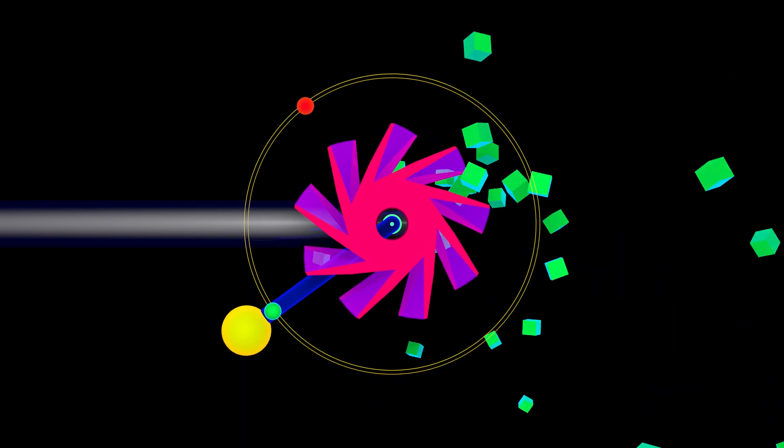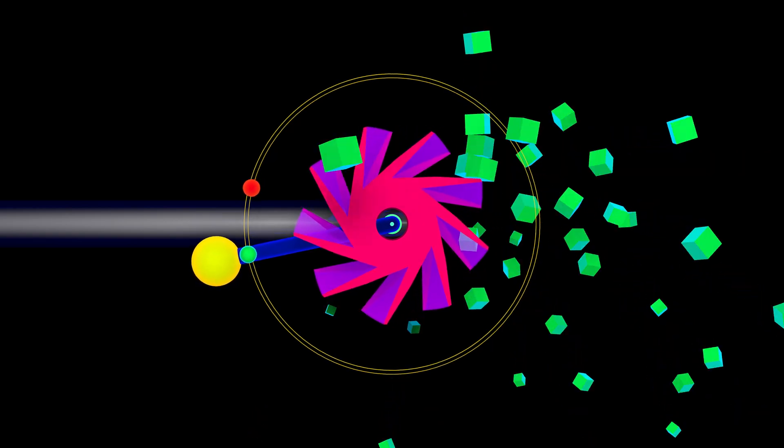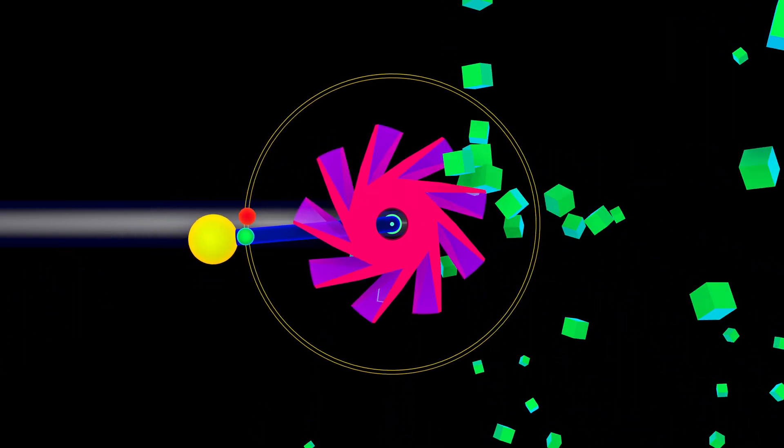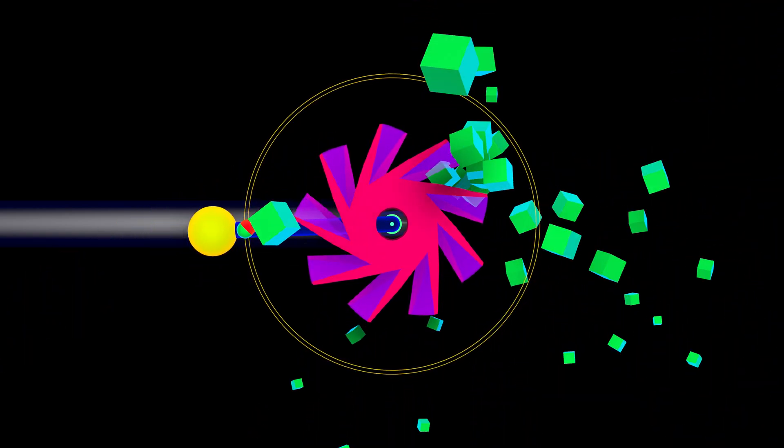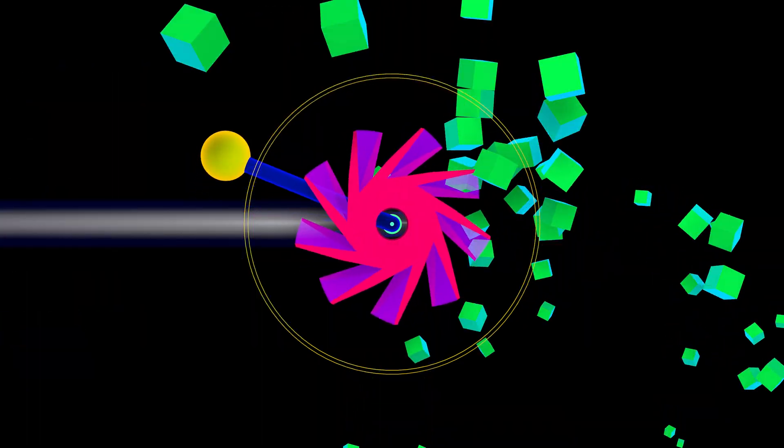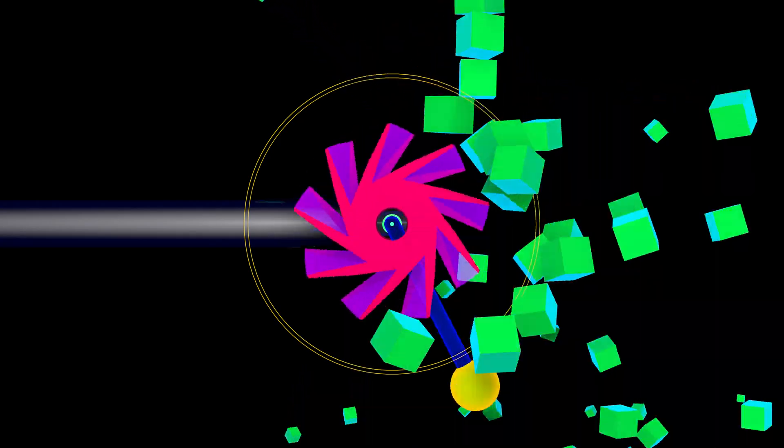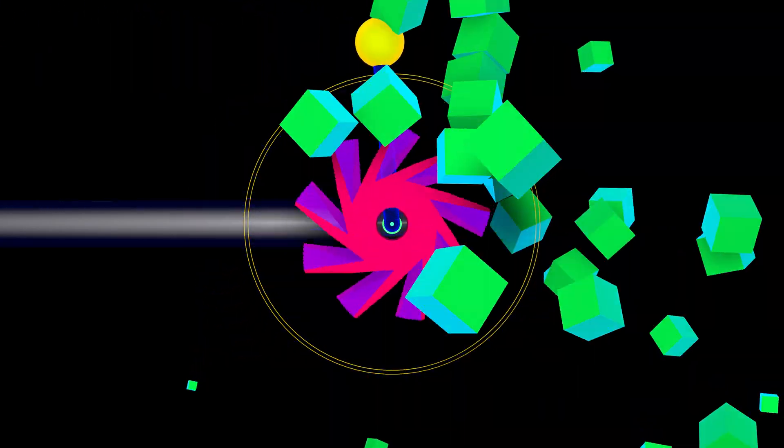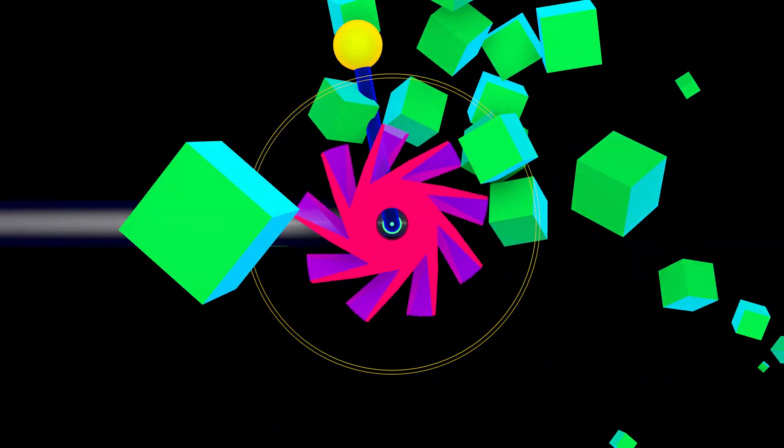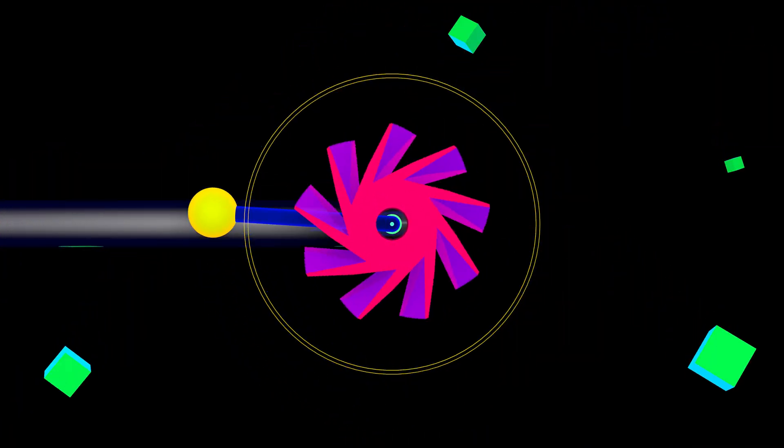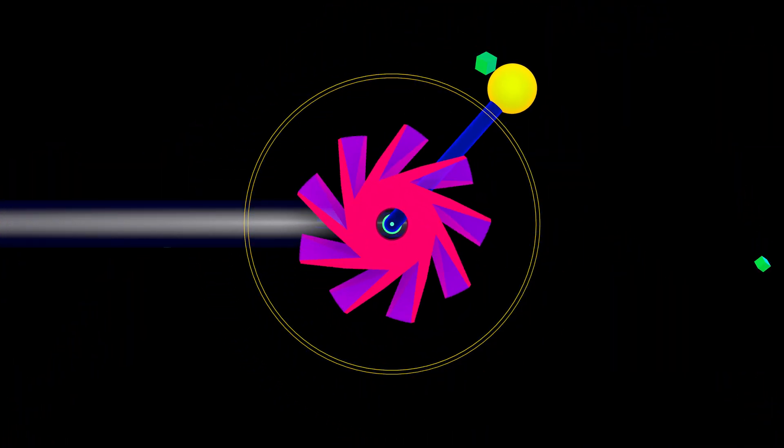If we keep increasing that torque, then this stable and this unstable equilibrium come together, and they get closer and closer, and then they collide and annihilate. And that's a saddle node bifurcation. And past that, the torque is sufficient that you just keep spinning. You just keep going and going and going. There are no equilibria at all. You're spinning around that circle.